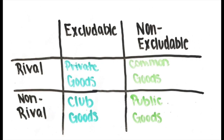This box shows all kinds of goods, whether they are rival and non-rival or excludable and non-excludable. The non-excludable goods — common goods such as mines and forests, and public goods such as air and sun — are the goods that cause externalities.